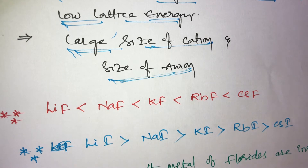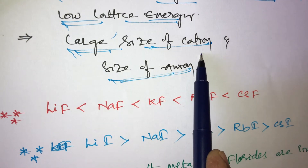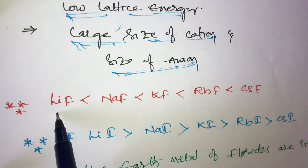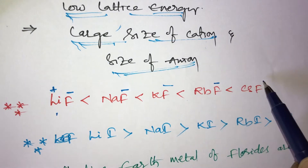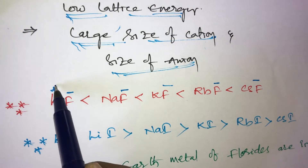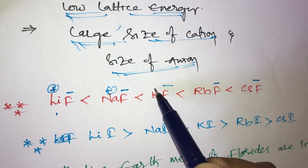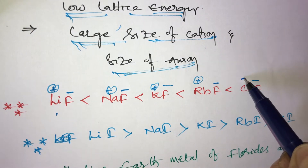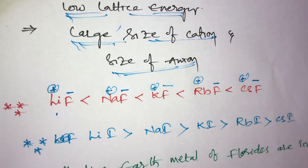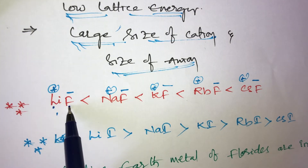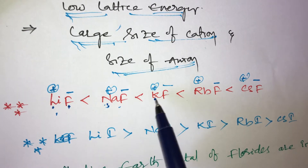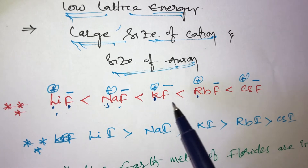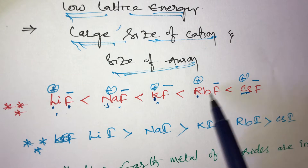Here the first factor is large size of cation. Lithium has a small size of cation, and small size of anion compared to others. Sodium is larger compared to lithium. Potassium is larger compared to sodium. Rubidium is larger compared to potassium. Cesium is the largest size compared to all other elements.